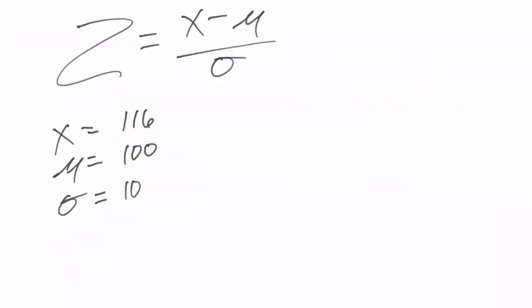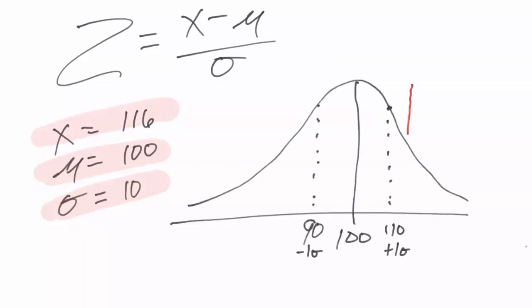All right, I've taken the information and just transposed it over to this newer screen. We've gone out and we've collected process performance data. The average for the data set that we collected was 100, the amount of variation measured in standard deviation was 10, and we've determined that our customer needs are set at 116 or less, so I'm going to draw that out.